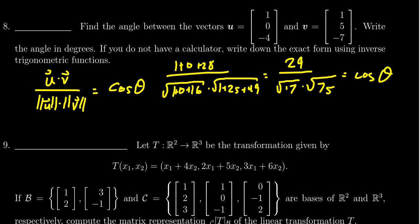In which case, then to find theta, we're going to take arc cosine of this. So theta equals arc cosine of 29 over the square root of 17 times the square root of 75. And this actually is the correct answer. This is the exact form of the answer for which the instructions here do tell us that you can put this in for the final answer and you would get full credit.